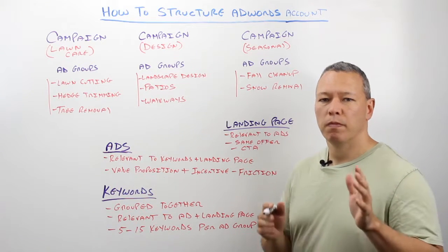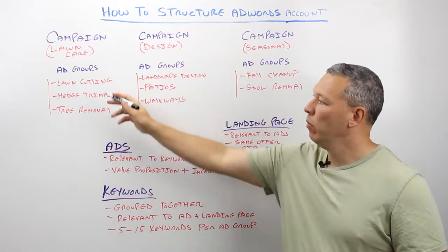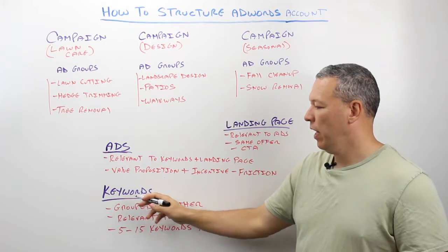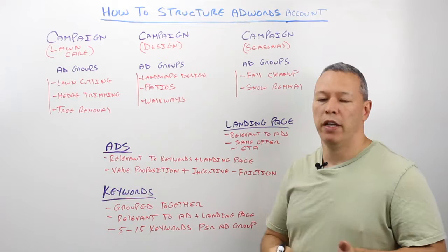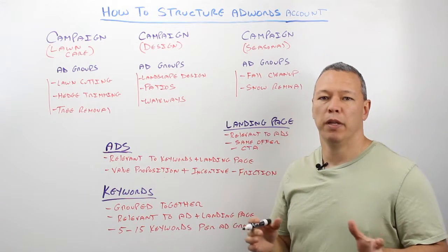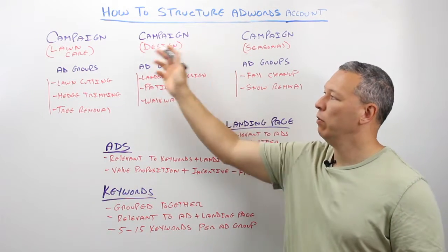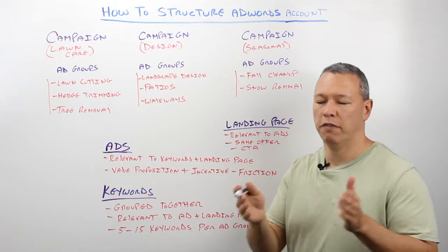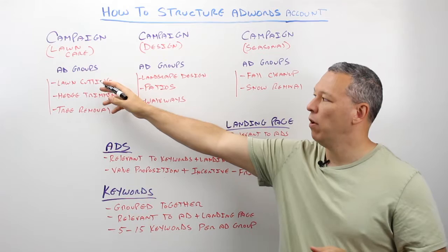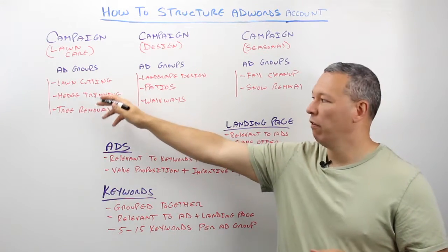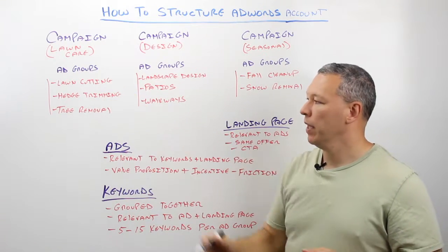When it comes to AdWords, it's grouped into a few different sections. We have our campaigns, we have our ad groups, we have our ads, and we have our keywords. When we group our campaigns, think of it like your website. On your main menu you probably have your services broken out by categories, and that's how you want to structure your campaigns — by different verticals of services that you offer for your business. Underneath each one you may have a variety of different offerings, and that's how you're going to group your ad group campaigns.